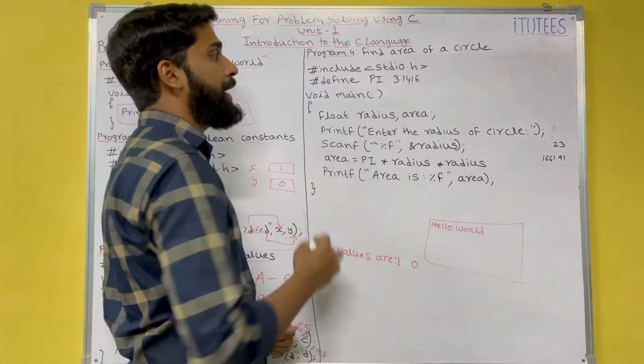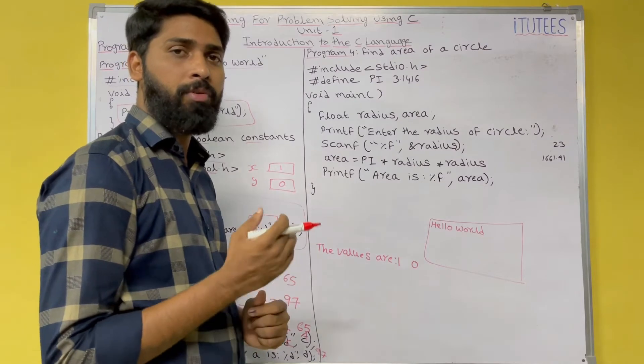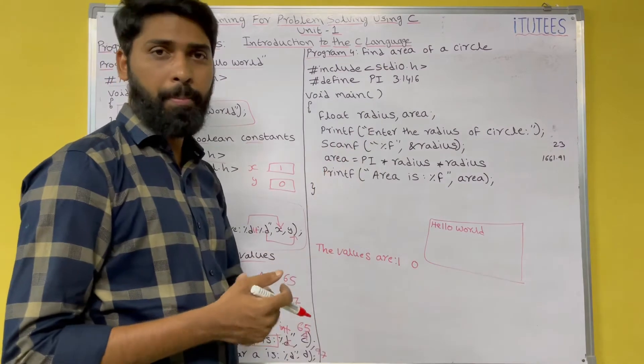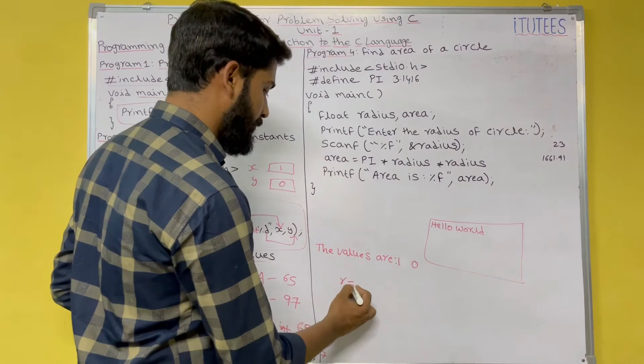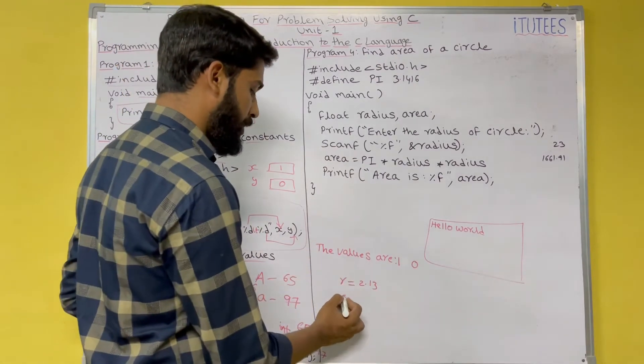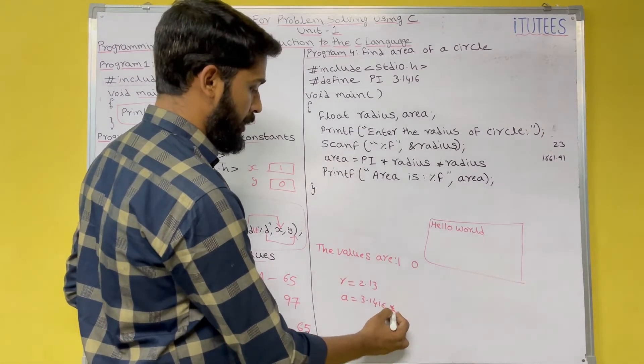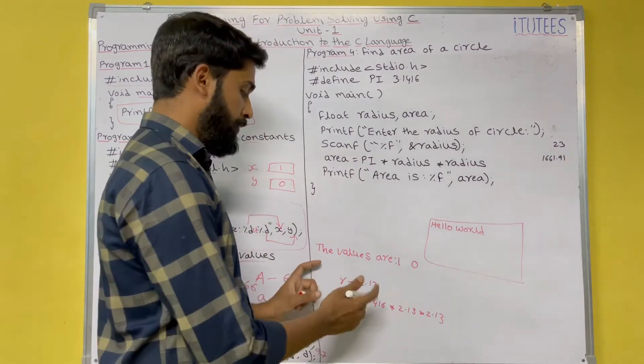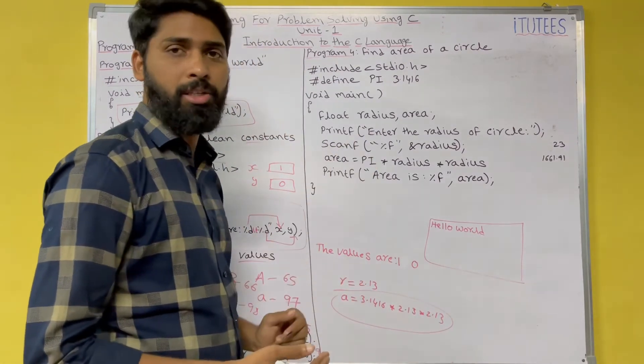Another program: find area of a circle. If you want to write this program, first, we know how to solve this problem manually. For area of a circle, we need the radius. If the radius is 2.13, then the area equals to pi r square. That means 3.1416 into 2.13 into 2.13. If we know this logic, how to find the area, then only we can write this program.